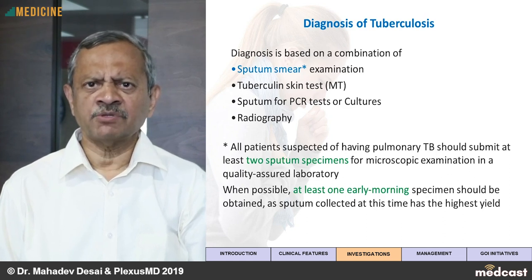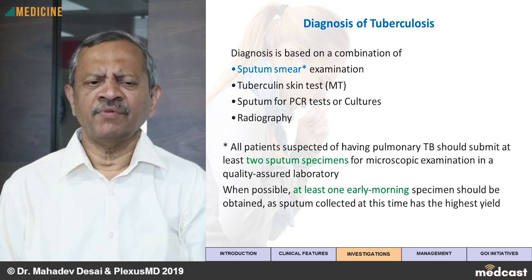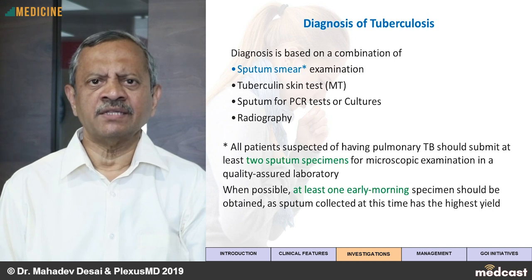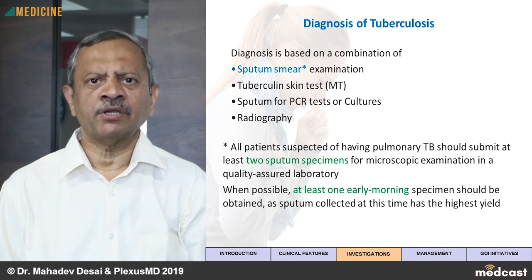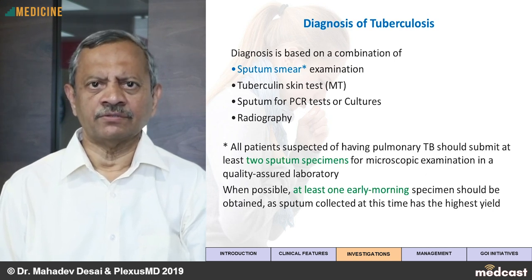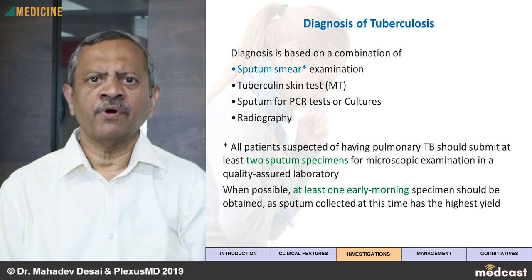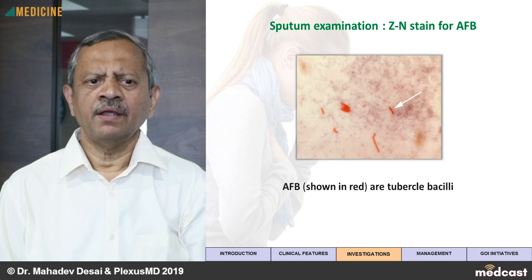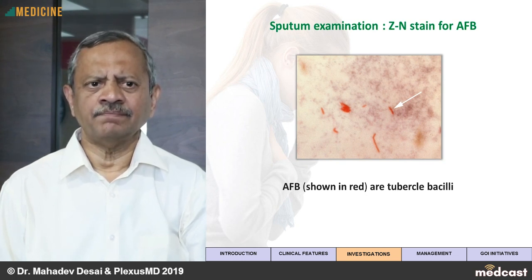When it comes to sputum smear, remember we need minimum two samples and one of them should be an early morning sample, because the early morning sample has the greatest yield for Mycobacterium tuberculosis. Whenever a sputum smear is requested, insist on an early morning sample. As shown in this slide, the tuberculosis bacilli are seen as red rods under ZN stain.